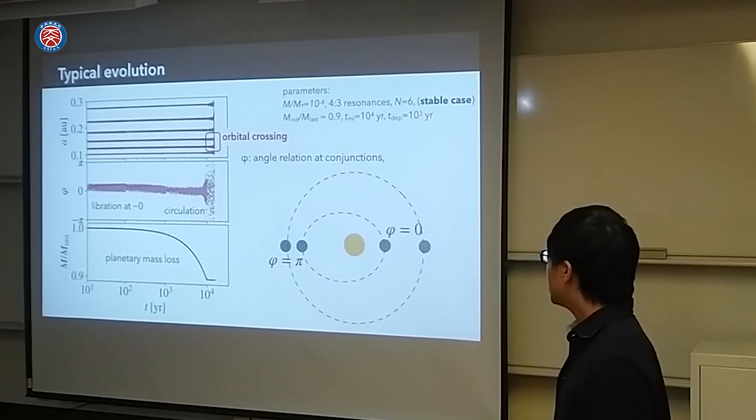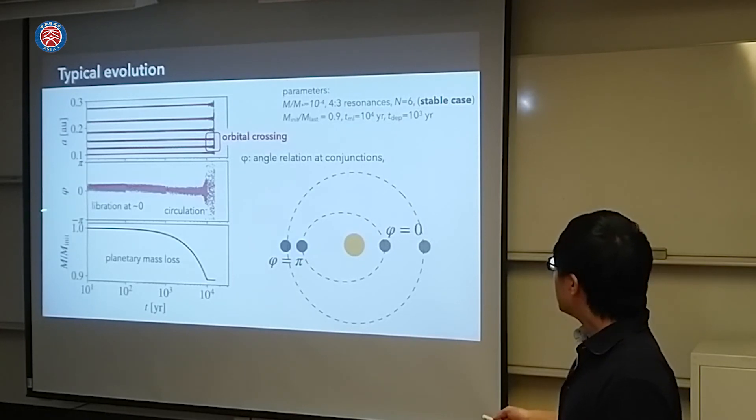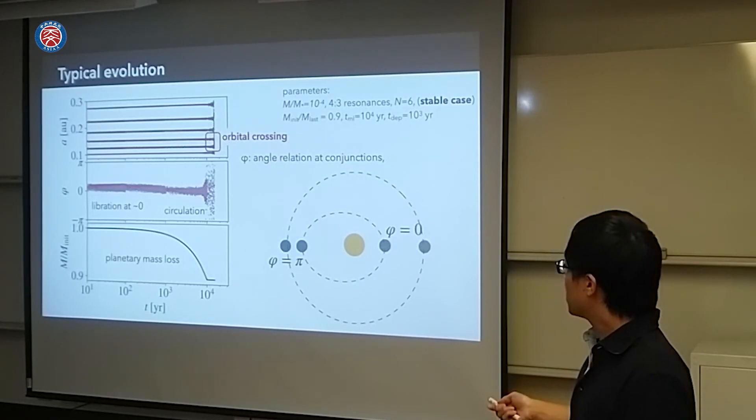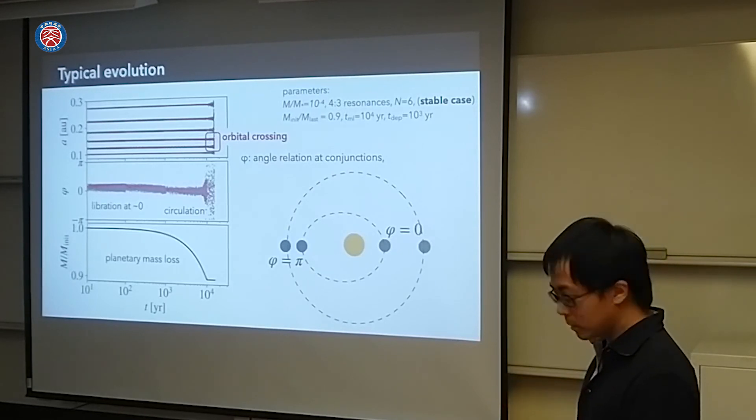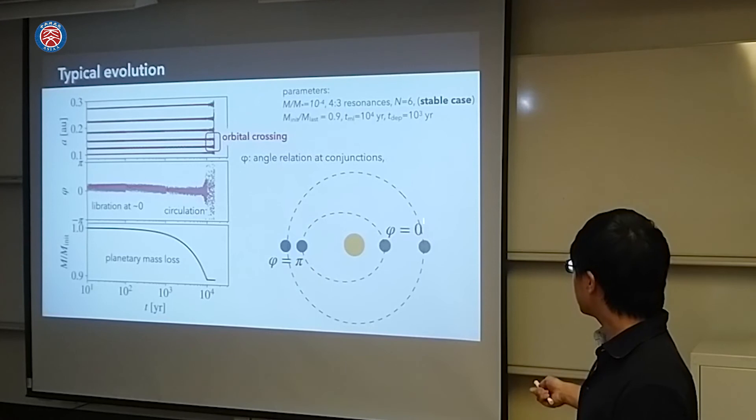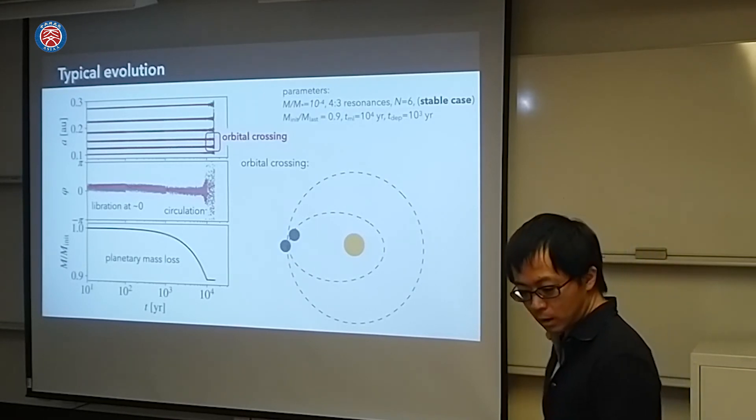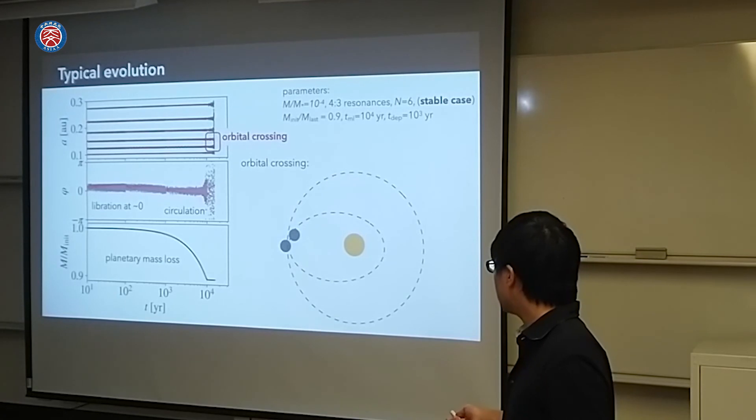This is the result. Initially mass is lost in first 10^4 years. They are stable configuration resonance. These are elaborating stable configuration resonances. But after about 10^4 years has passed, their libration causes transition to circulation from libration. They are not in resonance, causing orbital crossing. This kind of resonant configuration is broken and orbital crossing will go on and they will cause chaos.